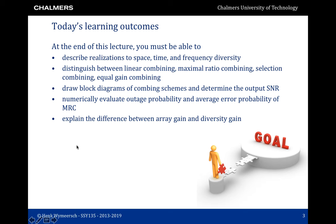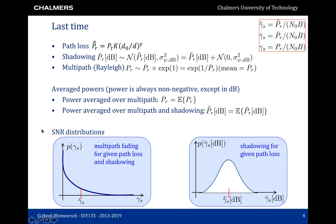First, a brief recap of the previous lecture. Last time we saw that there are different notions of SNR: SNR after path loss, SNR after path loss and shadowing, and SNR after path loss, shadowing and multipath. We saw that the SNR after shadowing has a certain Gaussian distribution, with a mean given by the SNR after path loss only. From this we can draw a realization and find the distribution of the SNR after path loss, shadowing and multipath, given by an exponential distribution with a mean given by the SNR after path loss and shadowing.